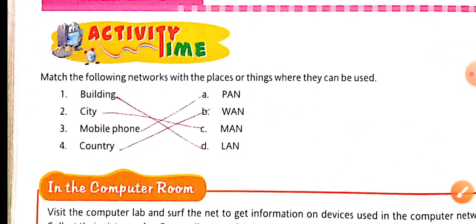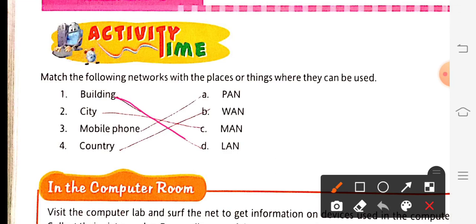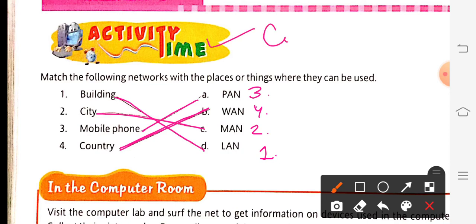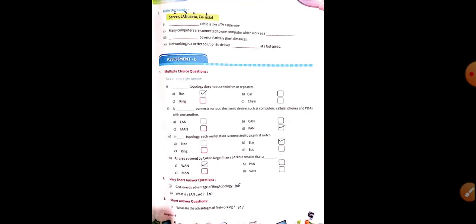Assessment C: match the following network with the places or things where they are used. Building — LAN; city — MAN; mobile phone — PAN; country — WAN. The answers are: three, four, two, one. This completes the chapter. Please complete your work in your copy and learn it. That's all for today, thank you.